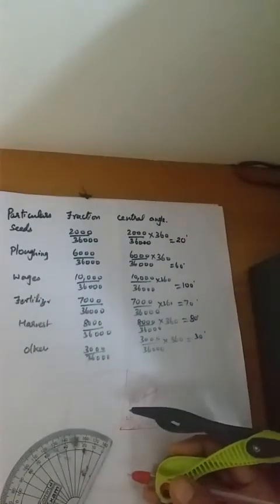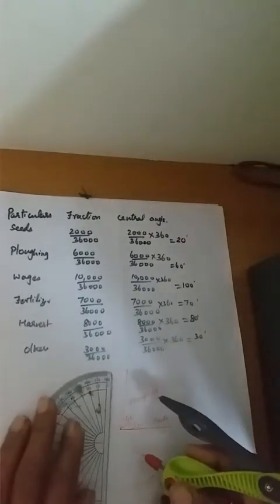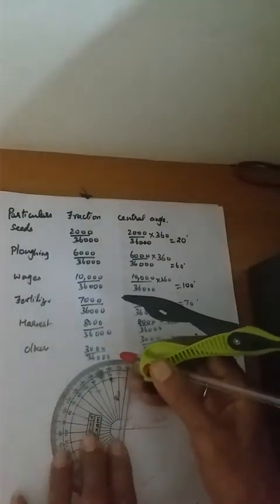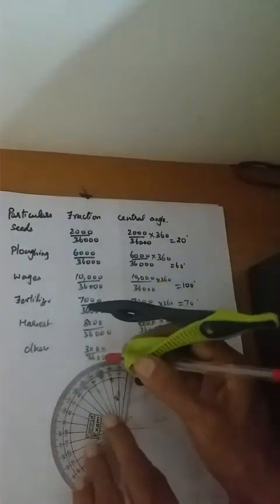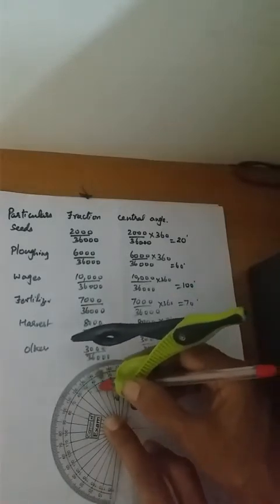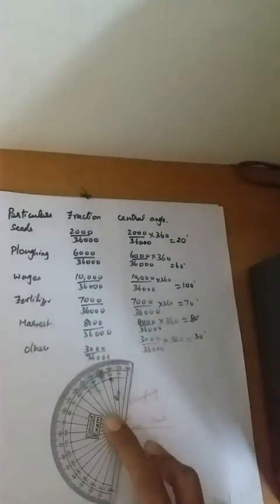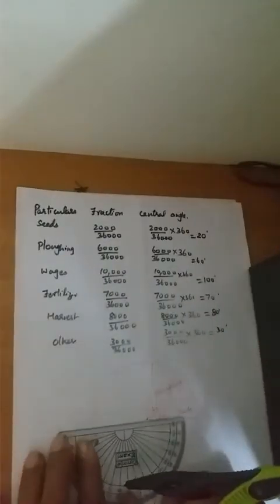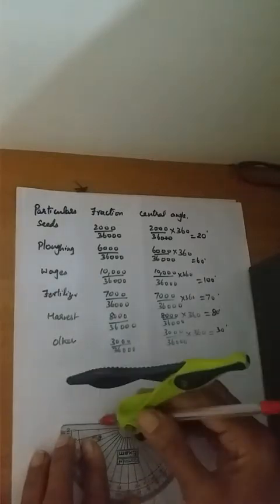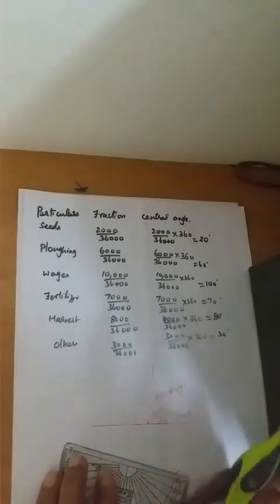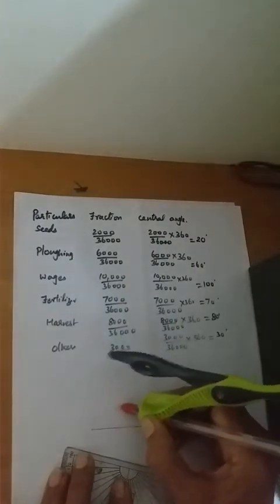Next is 'Wages' at 100 degrees. Keep the protractor positioned at the last line and mark 100 degrees — counting 0, 10, 20, 30, 40, 50, 60, 70, 80, 90, 100. This is an obtuse angle of 100 degrees. Note that 20 plus 60 is 80, and 80 plus 100 gives 180 — that should be a straight line, so don't forget that.